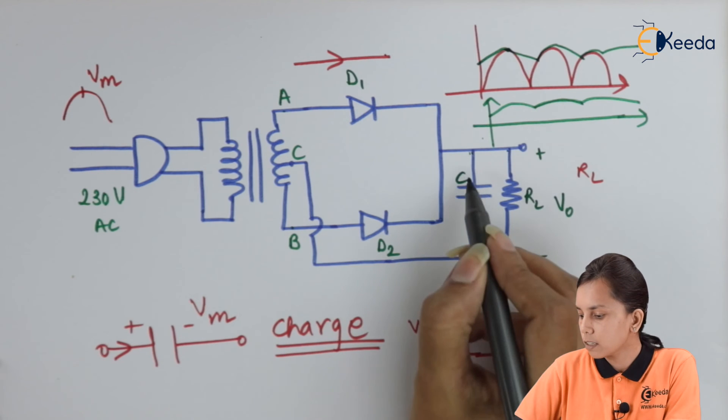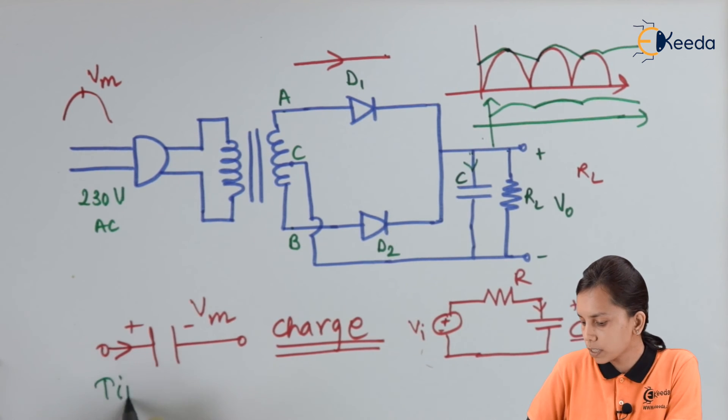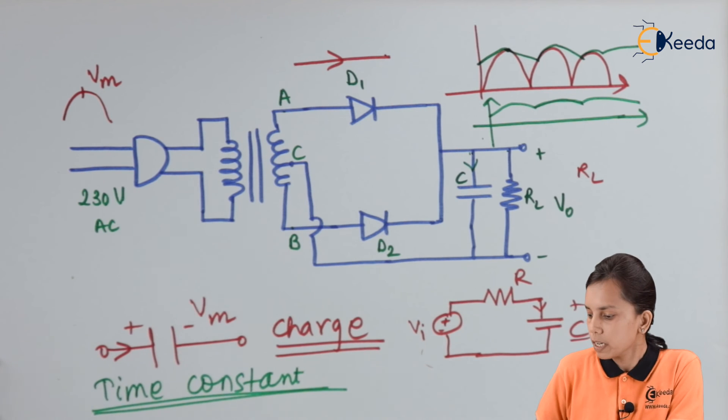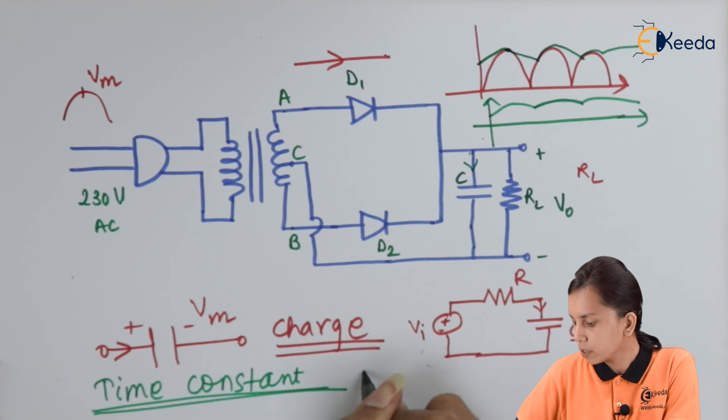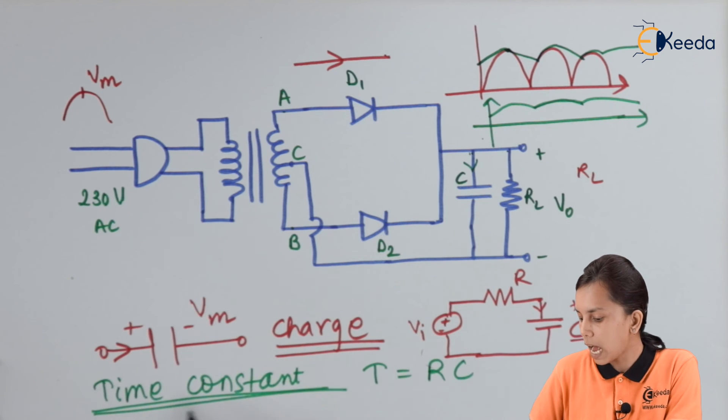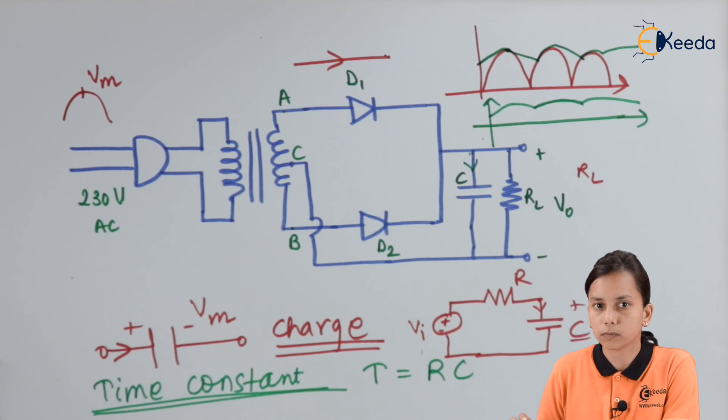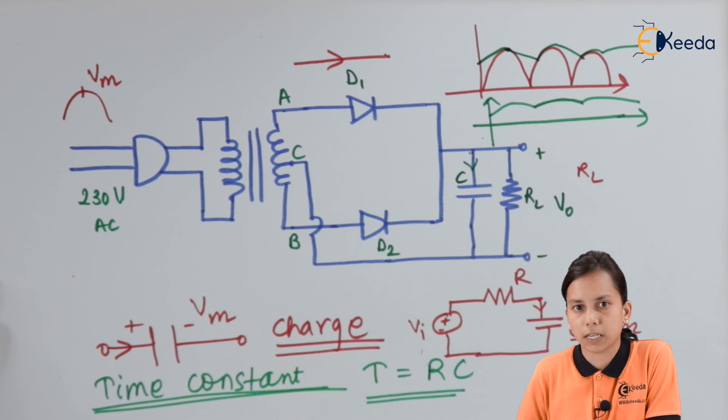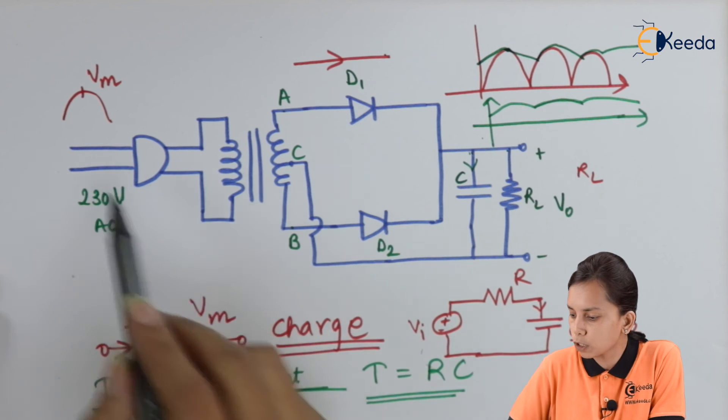One more thing that the time constant is the factor, very important factor for the capacitor. Time constant factor is defined with the help of the multiplication of resistance and capacitor. The higher the time constant, it will take more and more time to discharge and charge. When I am saying that capacitor is charging, it will take lesser time. And during discharging, it will take more time because of the time constant.